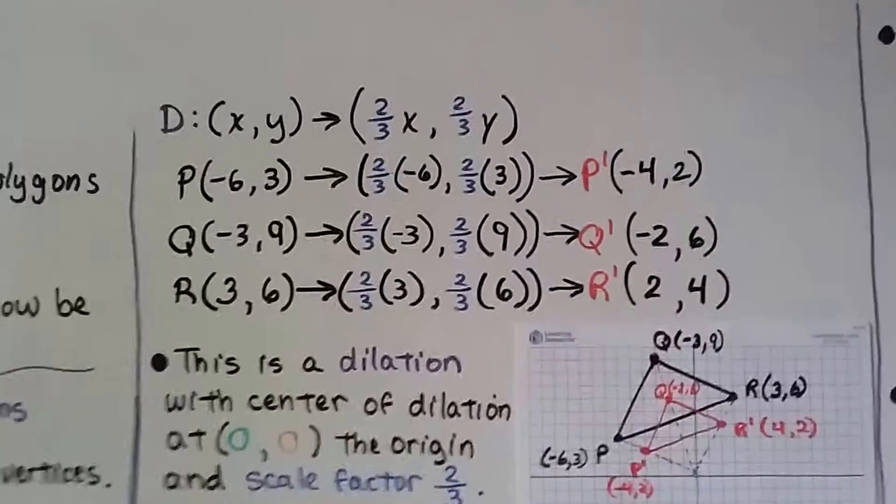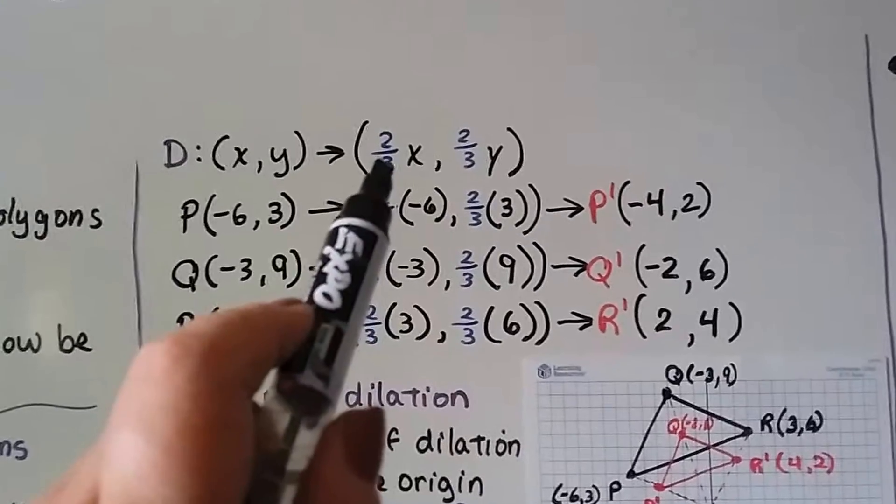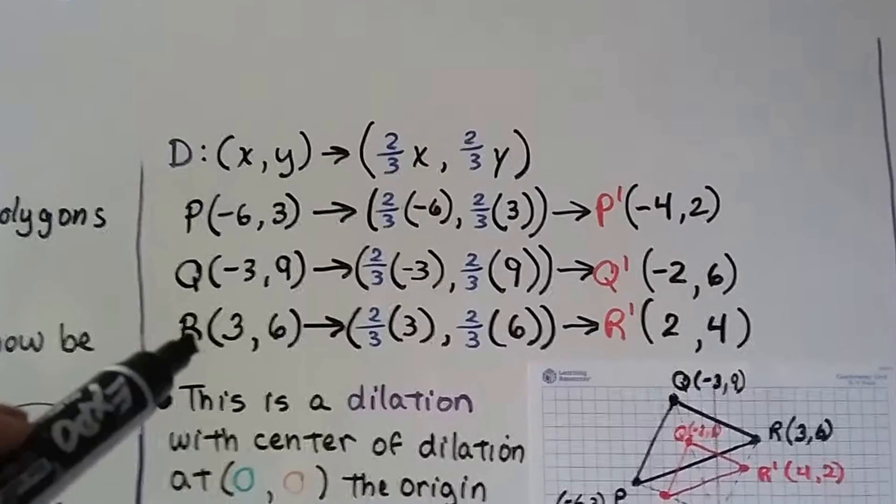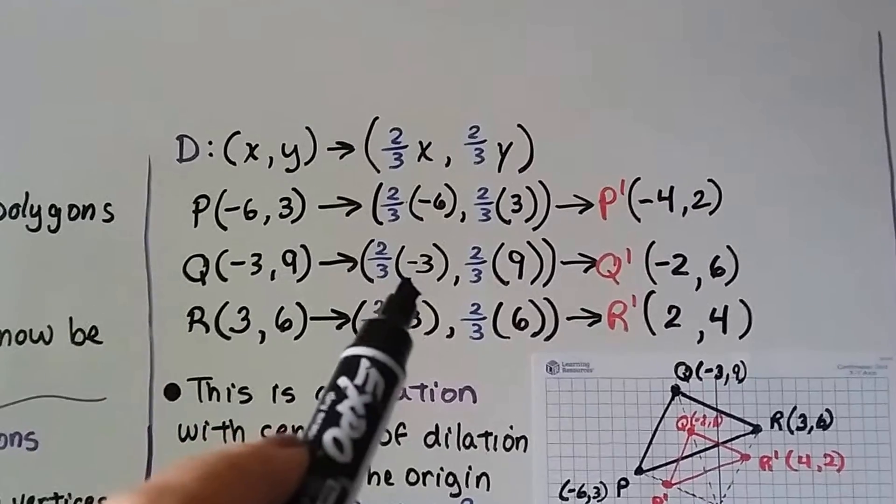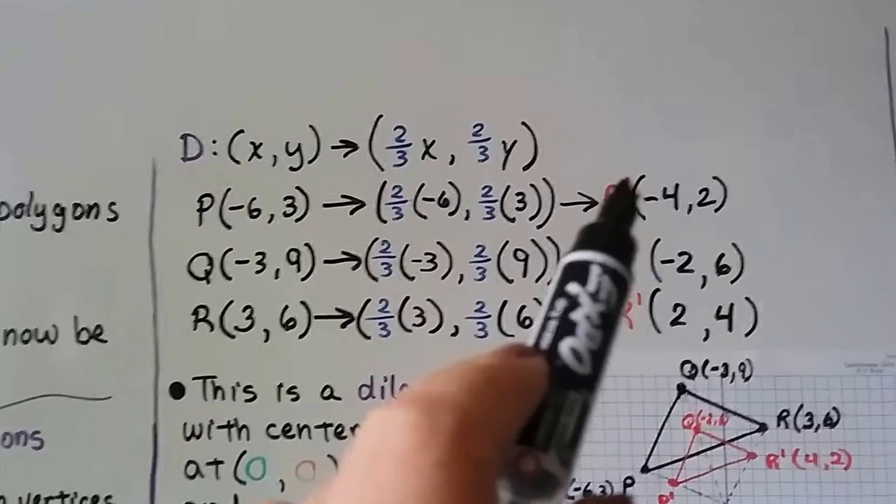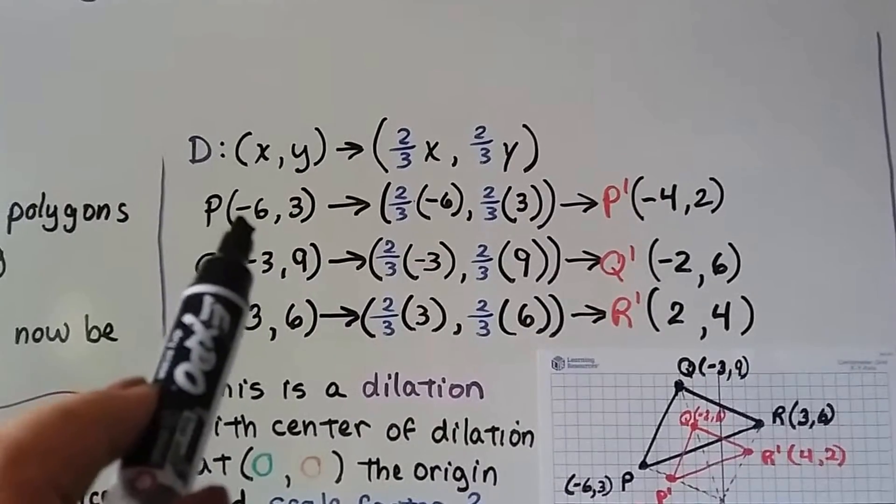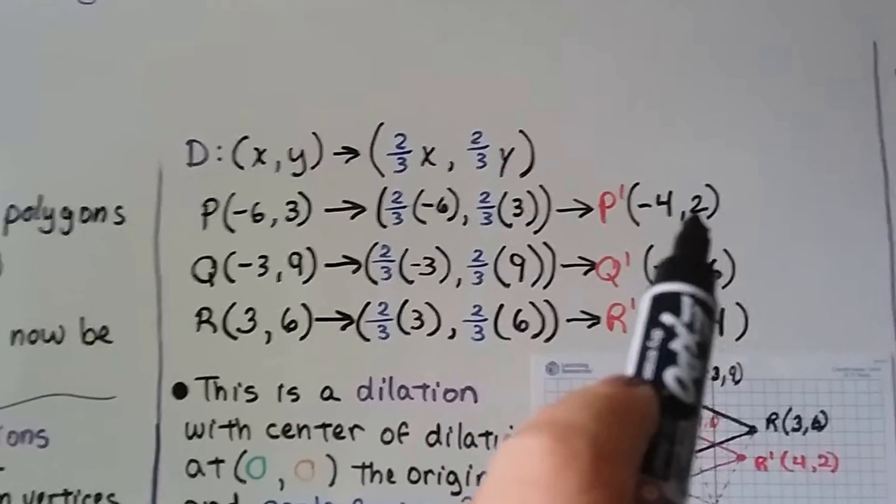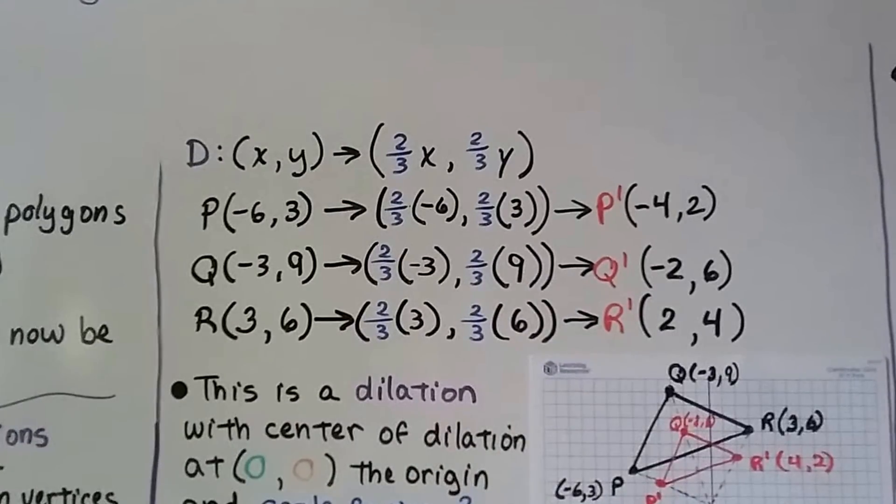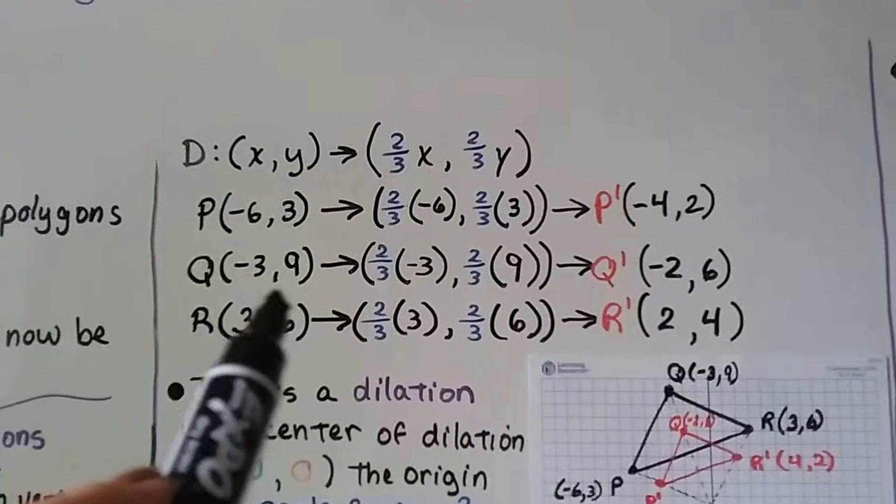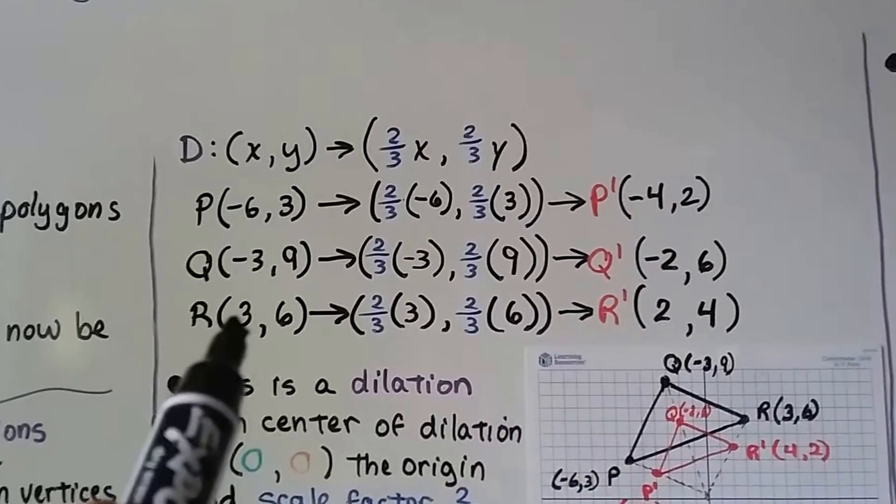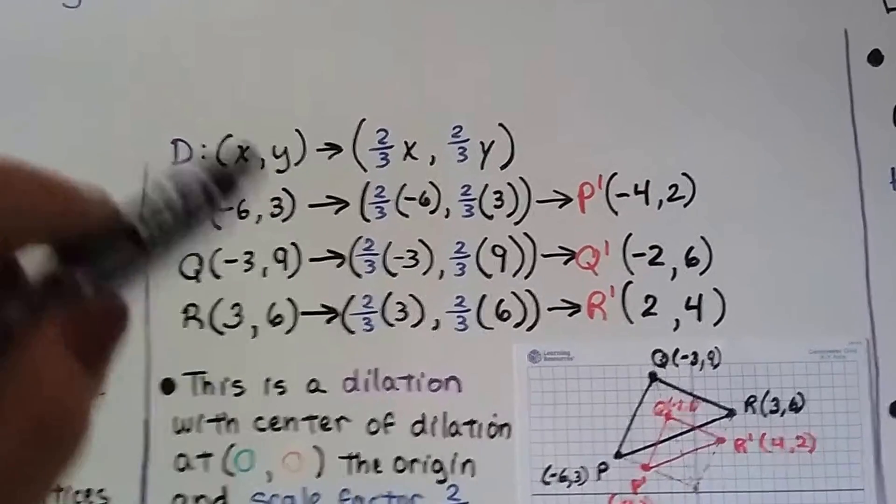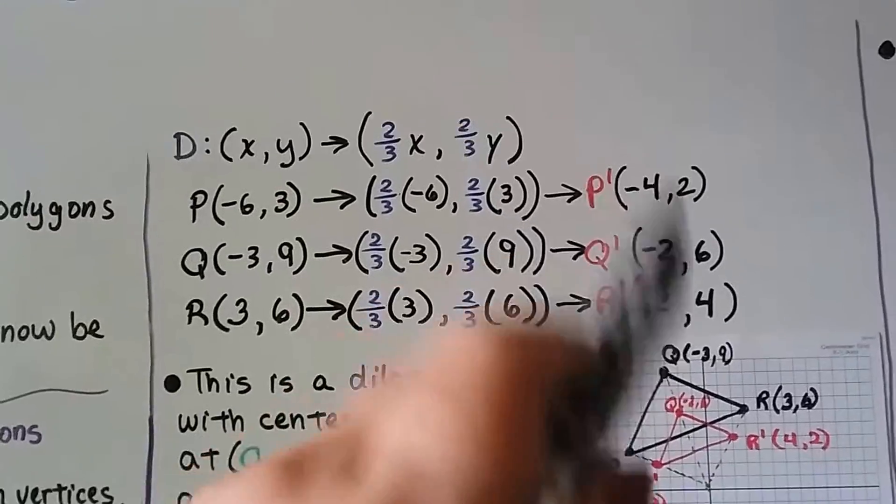Here we have a dilation D, but we're supposed to multiply our x and y values by 2/3. That's less than 1. So we have P, Q, R and the ordered pairs. When we multiply each of them by 2/3, we get P prime, Q prime, R prime. And look, P went from (-6,3) to (-4,2). That's smaller. And Q went from (-3,9) to (-2,6), and R went from (3,6) to R prime as (2,4).